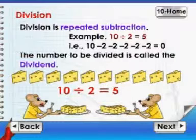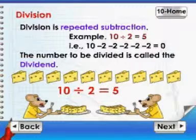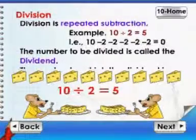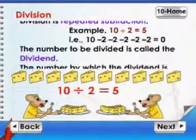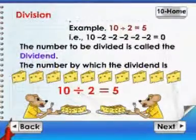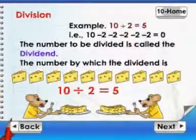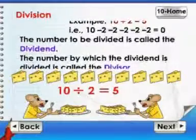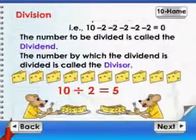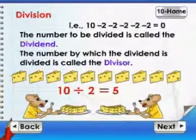Division. Division is repeated subtraction. For example, 10 divided by 2 is equal to 5. That is, 10 minus 2 minus 2 minus 2 minus 2 minus 2 is equal to 0.